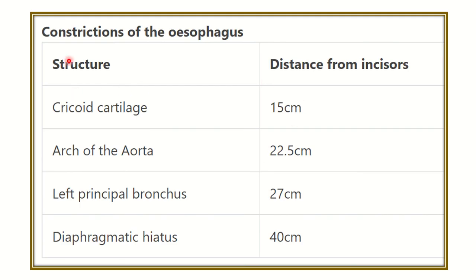The sites and distances from the incisor teeth are: first, cricoid cartilage or pharyngoesophageal junction at 15 cm; second, arch of the aorta at 22.5 cm; third, left principal bronchus at 27 cm; and fourth, diaphragmatic hiatus at 40 cm from the incisor teeth.